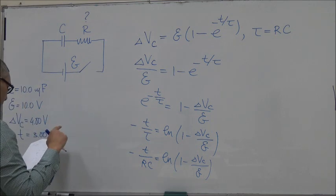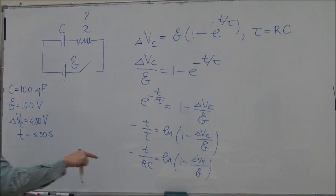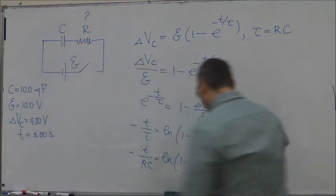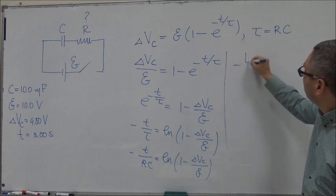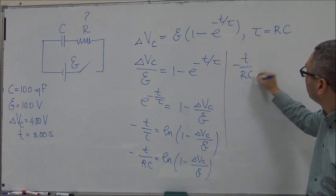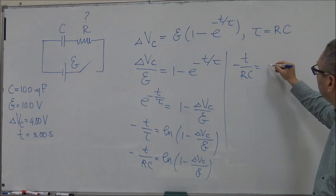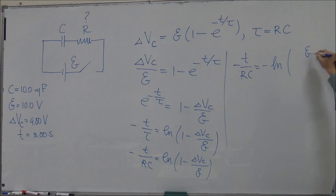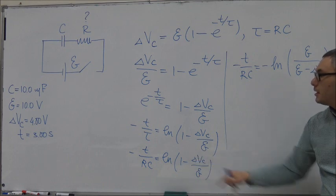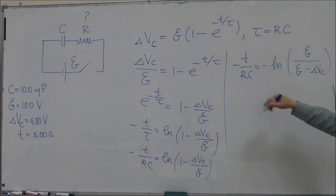One way you can get rid of the minus sign is if you remember that this can also be written as -ln(ε/(ε - ΔVc)). I've just flipped the argument inside the function and the minus came out, so the minus will cancel out.